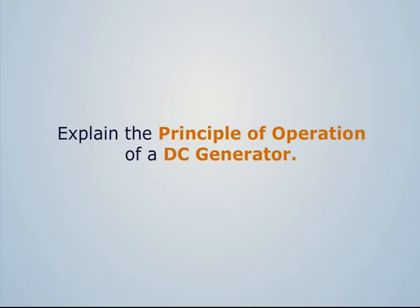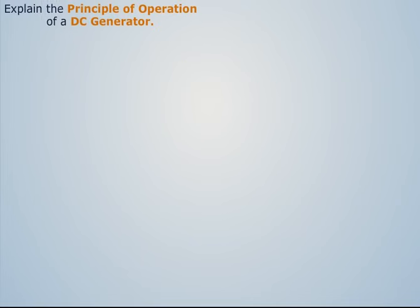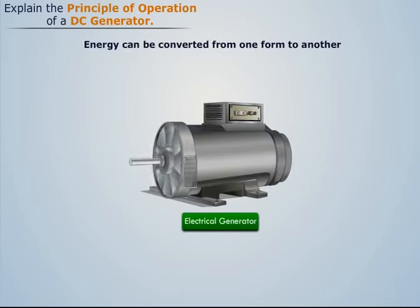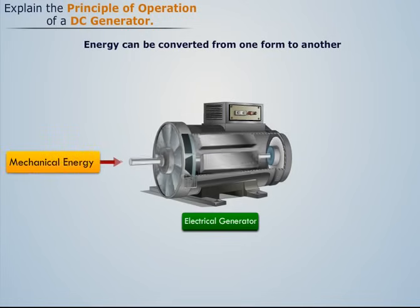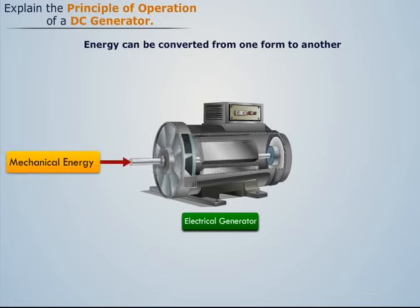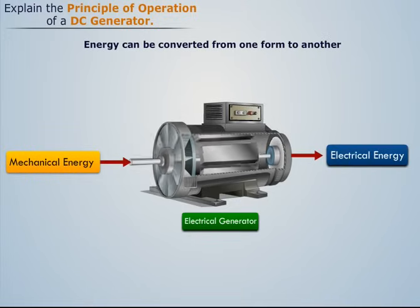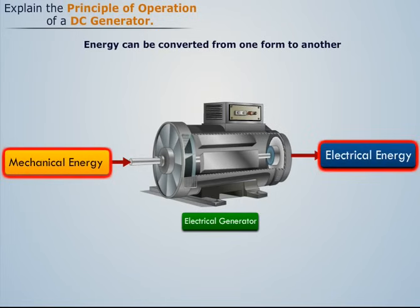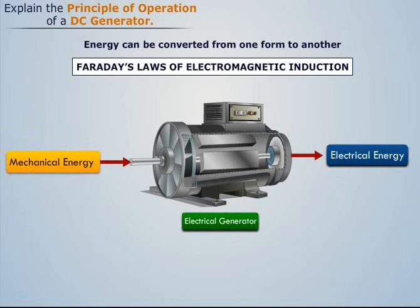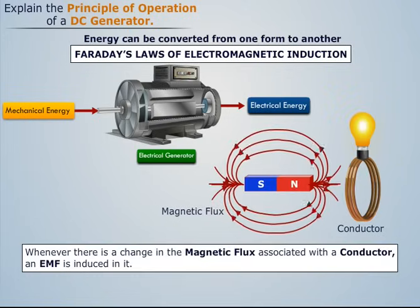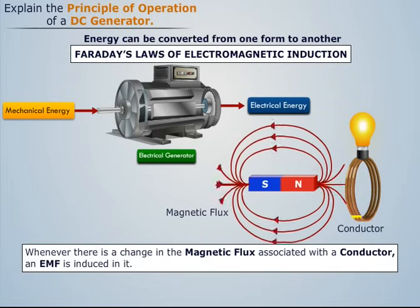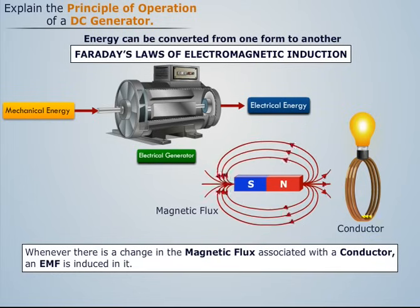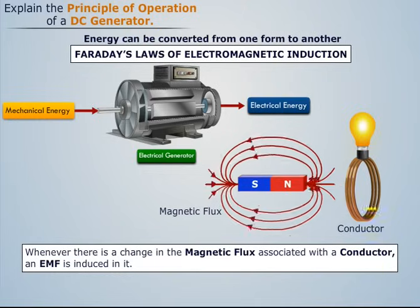Explain the principle of operation of a DC generator. We know that an electrical generator is a device which converts mechanical energy into electrical energy. This energy conversion is based on the principle of electromagnetic induction, which states that whenever there is a change in the magnetic flux associated with the conductor, an EMF is induced in it. This induced EMF causes a current to flow if the conductor circuit is closed.